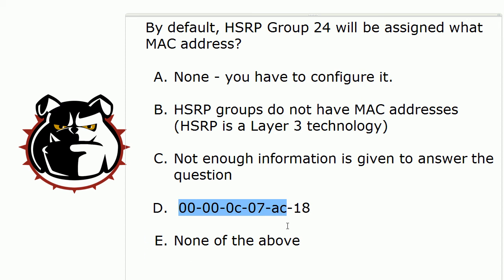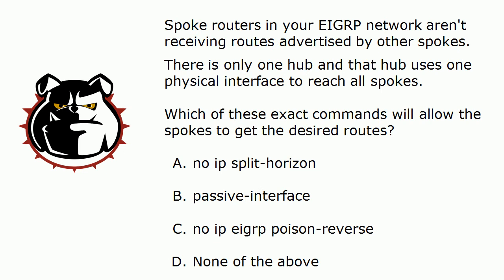Where does the 18 come from when the group number is 24? The key is that your group number, which is in decimal, is expressed in hex in the MAC address. So take decimal 24: you have one unit of 16 with a remainder of 8, giving you hex 18. That is the hex equivalent of decimal 24. Make sure you've brushed up on your hex before taking the CCNP exams.